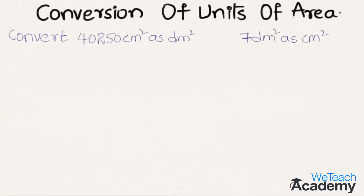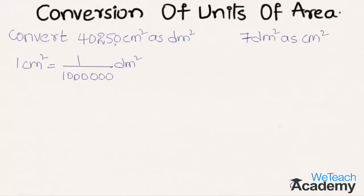Now let us proceed and solve an example on the same concept. The given example is to convert forty thousand two hundred fifty centimeter square into decameter square, and then seven decameter square into centimeter square. Let us first convert centimeter square into decameter square. We already know that one centimeter square is equal to one by one million decameter square. So to convert forty thousand two hundred fifty centimeter square into decameter square, we can write this as forty thousand two hundred fifty into one by one million decameter square.